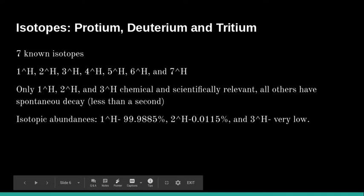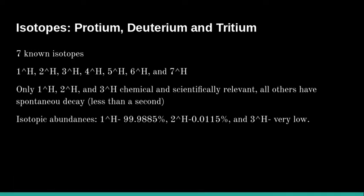Isotopes: There are three main isotopes present in hydrogen—protium, deuterium, and tritium. There are seven known isotopes: H1, H2, H3, H4, H5, H6, and H7.